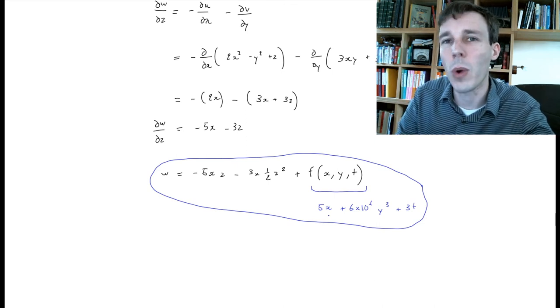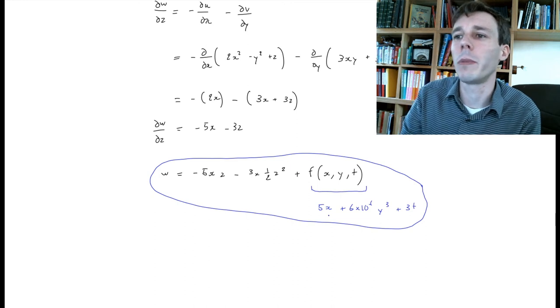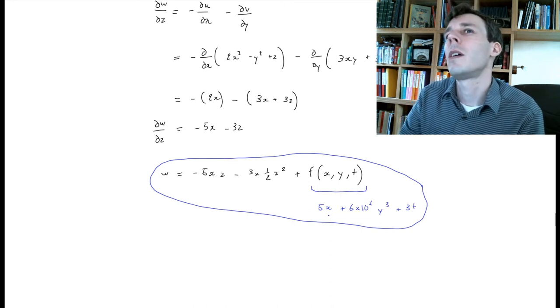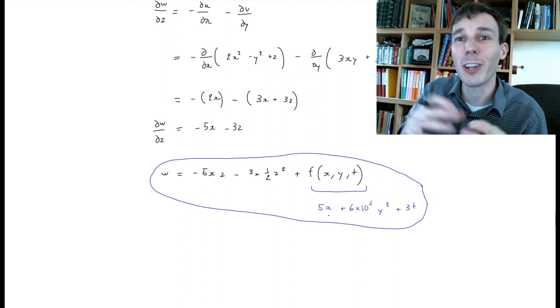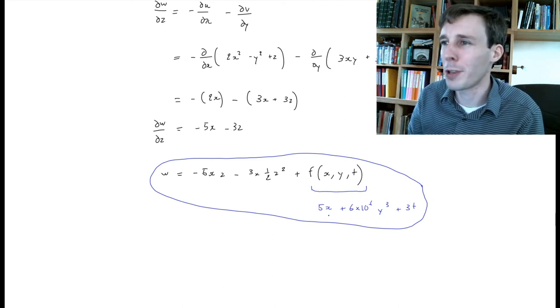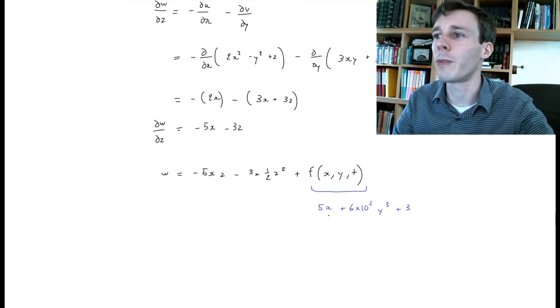And the answer is we don't know. To answer this question we need an equation that looks at the momentum of the flow, so we need to write something that says the change of velocity of the flow can only be due to certain forces. This is of course the Navier-Stokes equation, but this is a story for another chapter and another example.